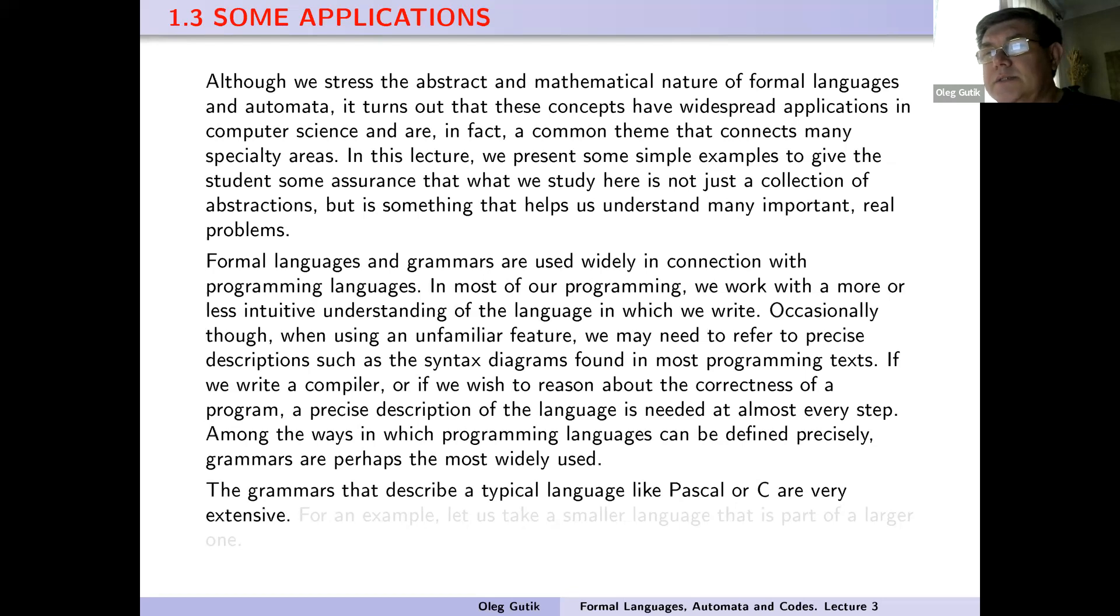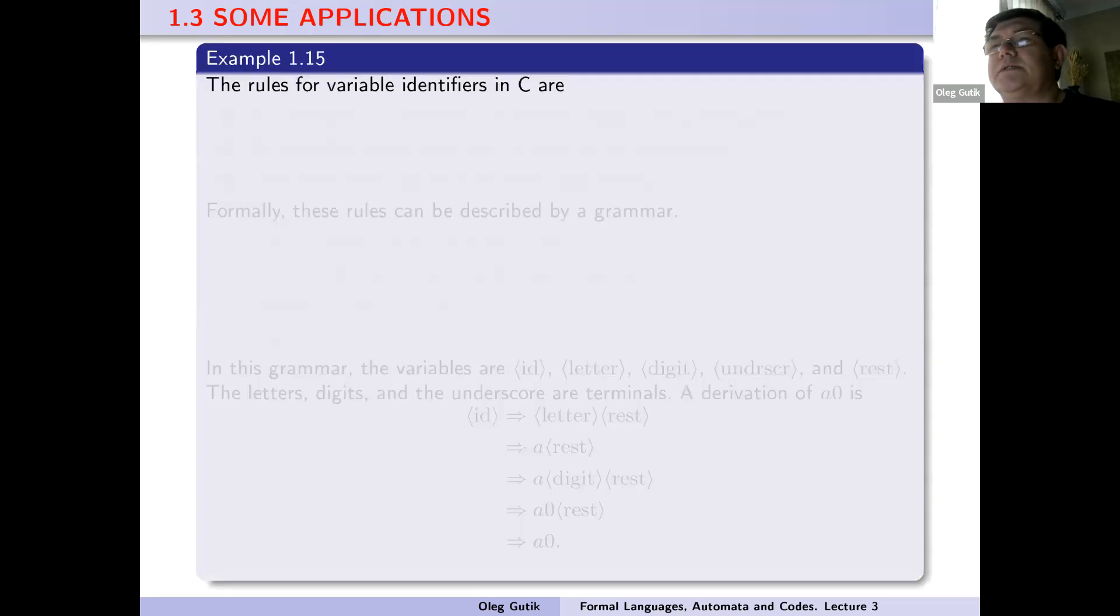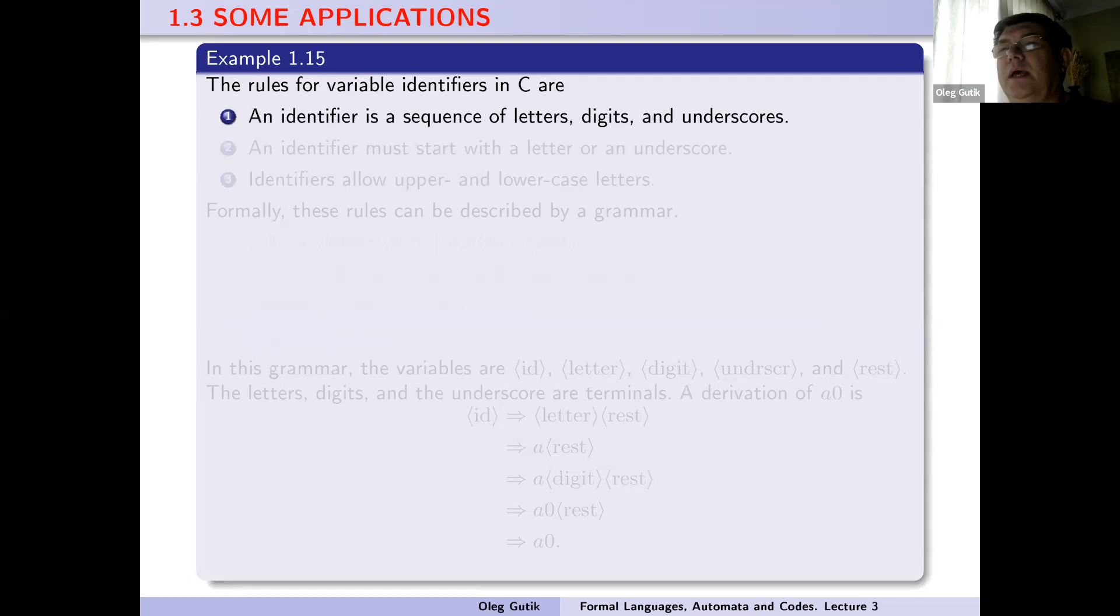The grammars that describe a typical language like Pascal or C are very extensive. For example, let us take a smaller language that is part of a larger one. The rules of variable or identifier in C are: an identifier is a sequence of letters, digits, and underscores. It must start with a letter or an underscore.